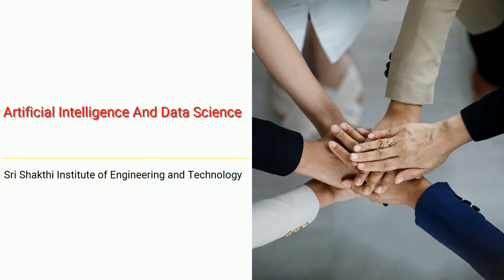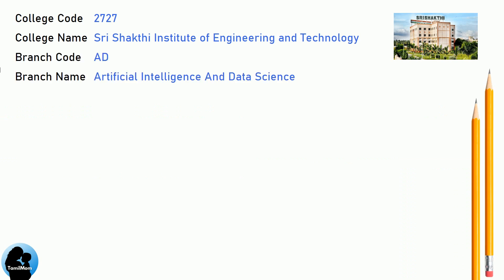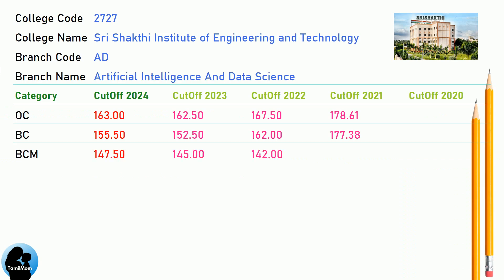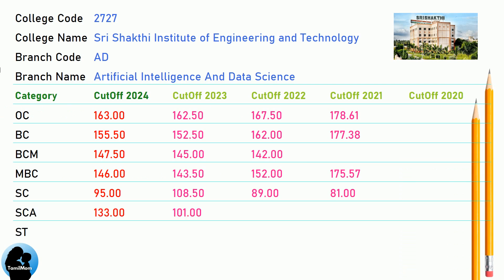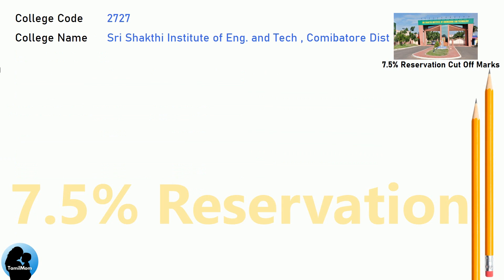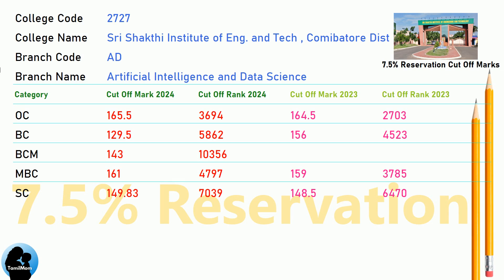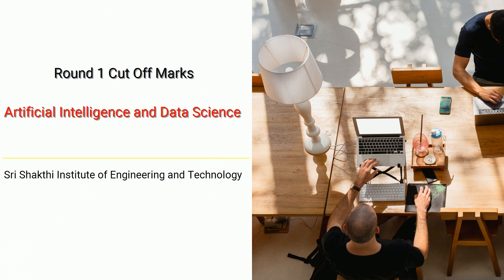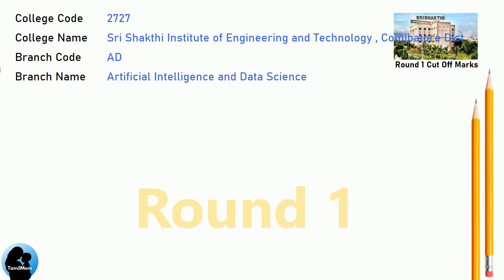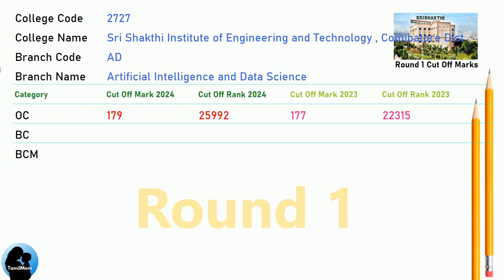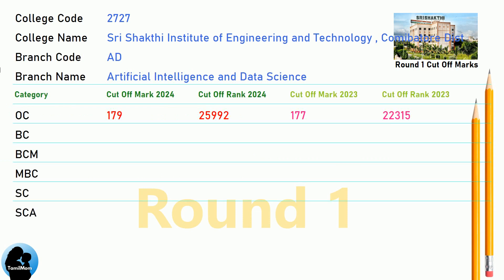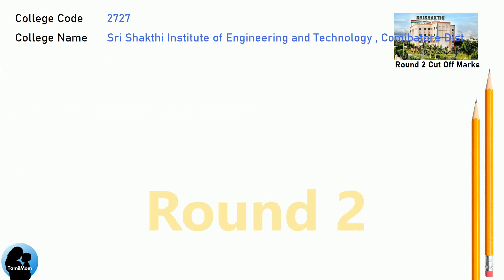DNA Cut-Off for Shri Shakti Institute of Engineering and Technology in Artificial Intelligence and Data Science. DNA 7.5 Reservation Cut-Off for Shri Shakti Institute of Engineering and Technology in Artificial Intelligence and Data Science. DNA Round 1 Cut-Off and Round 2 Cut-Off for Shri Shakti Institute of Engineering and Technology in Artificial Intelligence and Data Science.